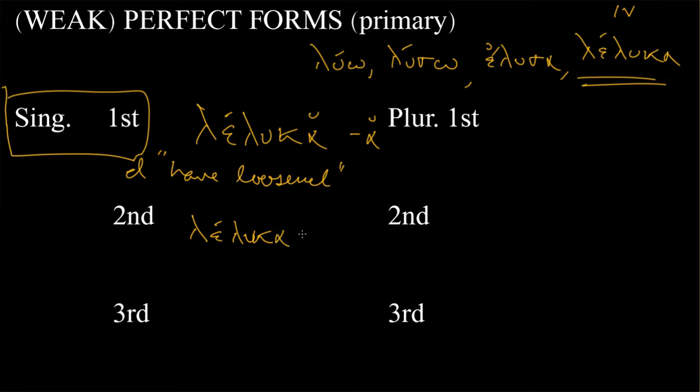λύω. I loosen. I will loosen. I loosened. I have loosened. And that's how we want to translate these. So I have loosened. And then that's a short alpha, as I was saying. The ending here is really just the short alpha. And this is a chart on page 214. It's available for you, but we're just going through it quickly here.